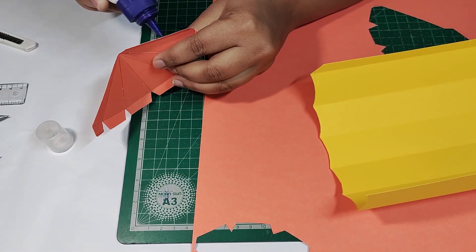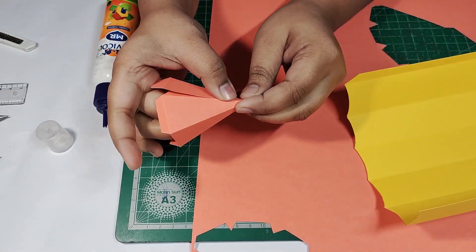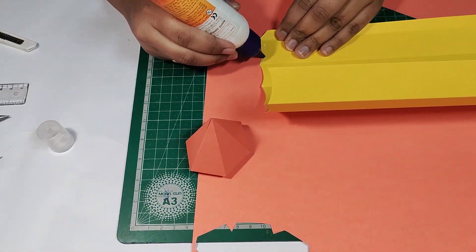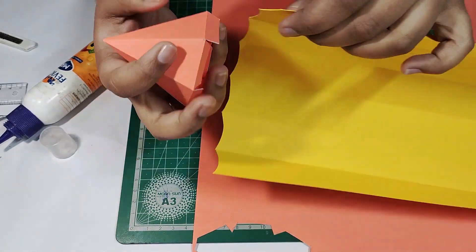For pasting, first we will paste the pyramid shape, then one by one we will paste all the sides onto the pencil body.